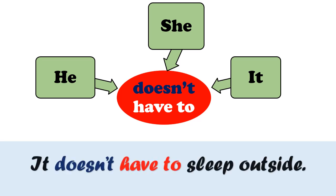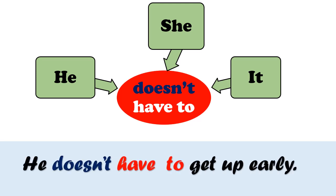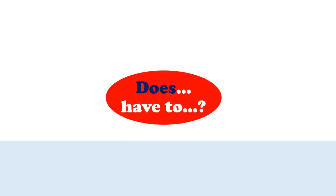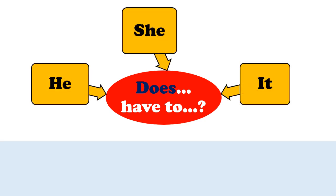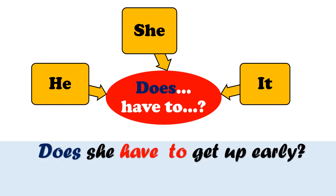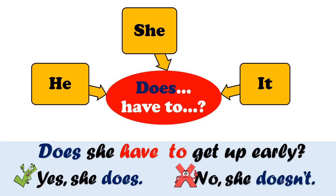Look at my examples. It doesn't have to sleep outside. Or, He doesn't have to get up early. Remember your teacher? Does she have to get up early? Yes or no? Yes. Yes, she does. And how about no? No, she doesn't.